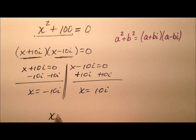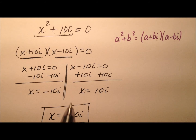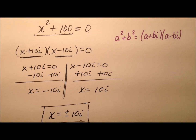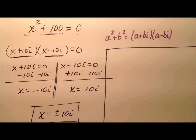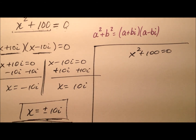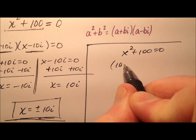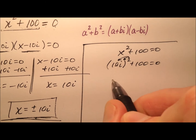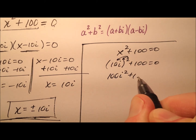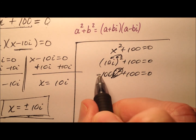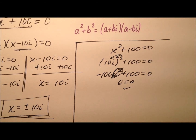So I can write both of those values together as x equals plus or minus 10i, and that will be the solution for x squared plus 100 equals zero. Let's plug them back in to see how it works. We'll test positive 10i first: 10i squared plus 100 equals zero. We square the 10 and square the i to get 100i squared plus 100 equals zero. Since i squared is negative one, we get negative 100 plus 100, which gives zero equals zero. So that one worked.